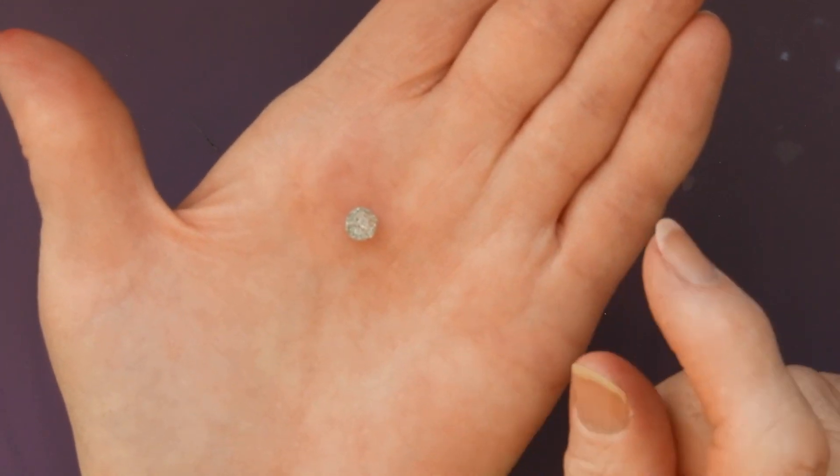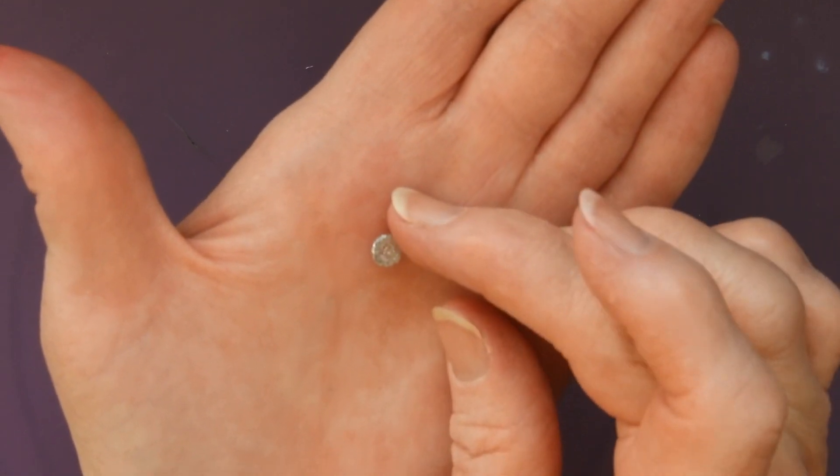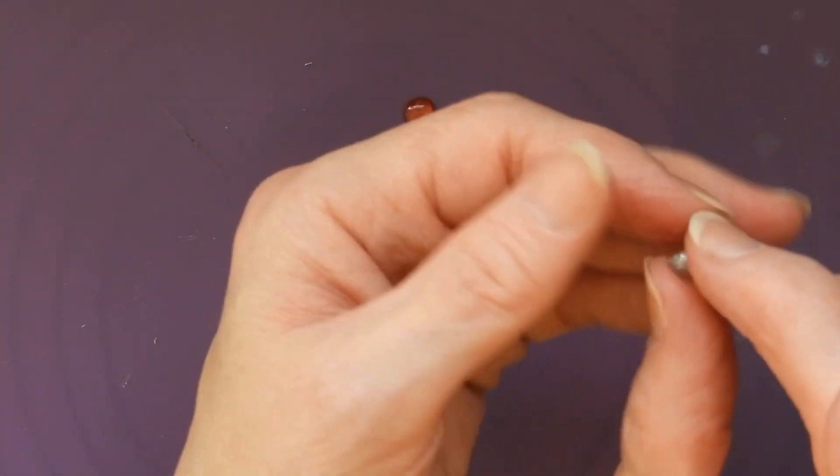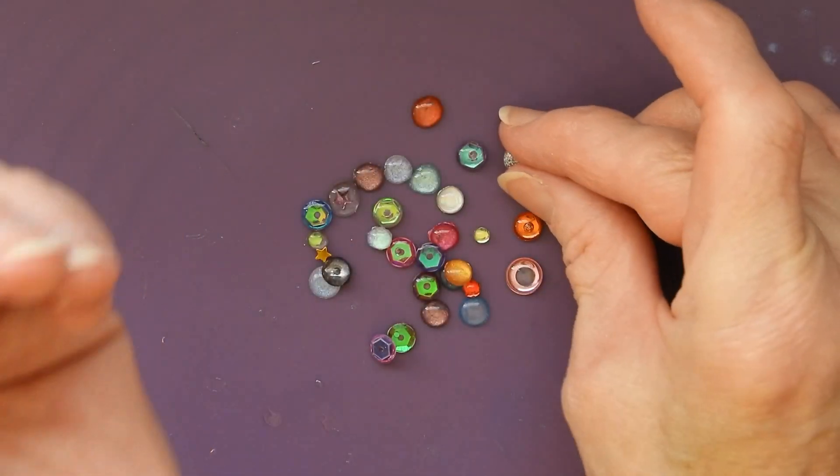And of course, it hangs on to the glitter because it's very sticky and it cures and then it grips it. And then you just pick it up and you have your little embellishment.